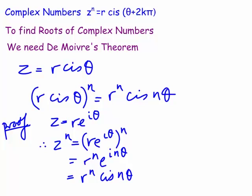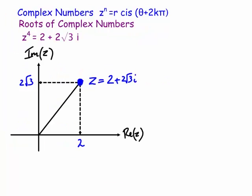You can also prove it by induction and other techniques. Now let's look at an application: we have the complex number 2 + 2√3i, and we're going to find the fourth roots of it — there are going to be four roots.